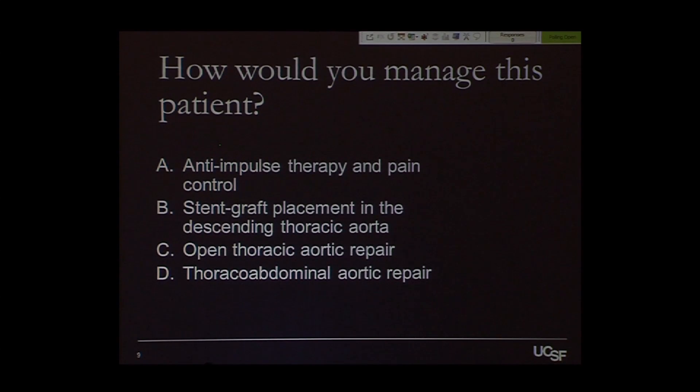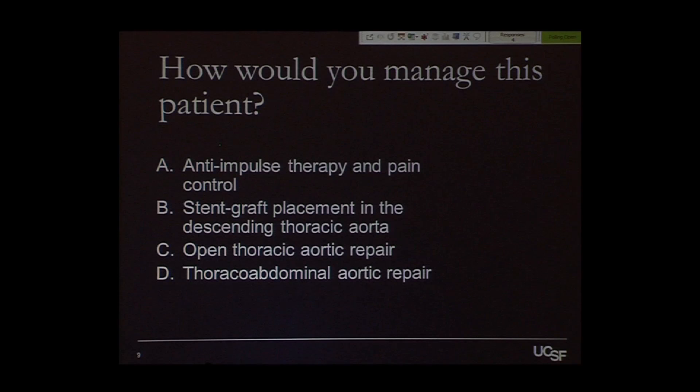You're now faced with this patient — a 55-year-old gentleman with a prior type A dissection, aortic valve and ascending arch repair, who now presents with a chronic type B dissection, possibly subacute within the last six months. How would you manage this patient? Options include: anti-impulse control and pain control, stent graft placement in the descending thoracic aorta, or open thoracal abdominal aortic repair.